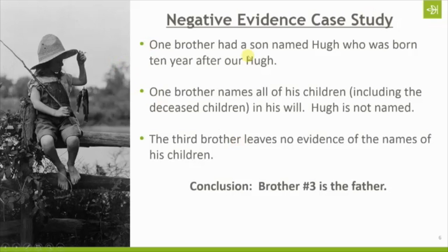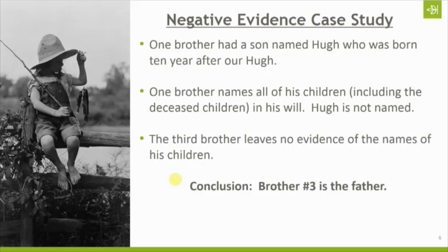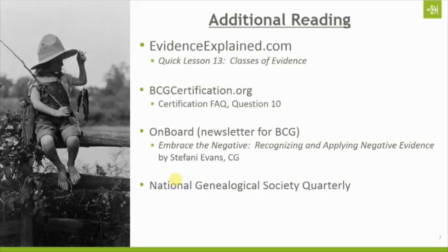If we hadn't done that research, it would have been easy to say this Hugh is our Hugh and assign him the wrong parents — or to accept brother number two as his father, as several family trees did. Then we would have ended up climbing someone else's family tree instead of our own. One of the reasons this process is so important is not just because I'm interested in the truth — it's also because I want to make sure I'm honoring my ancestors with accuracy and that I'm climbing my own family tree, not doing a whole bunch of research that is not pertinent to me and my ancestry.